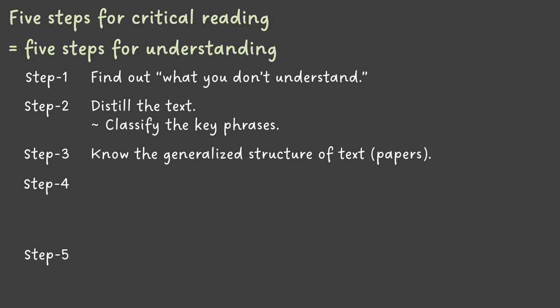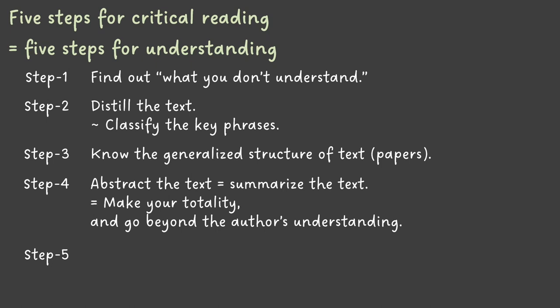In step four, finally, I'm going to come to the abstraction of the text — it's a summarization. In other words, it's a paraphrasing. Coming to this point, you are going to be able to explain the point of the paper in your own words — not the author's words. And if you can do it simply, you can now use the content of the paper. This is the first goal.